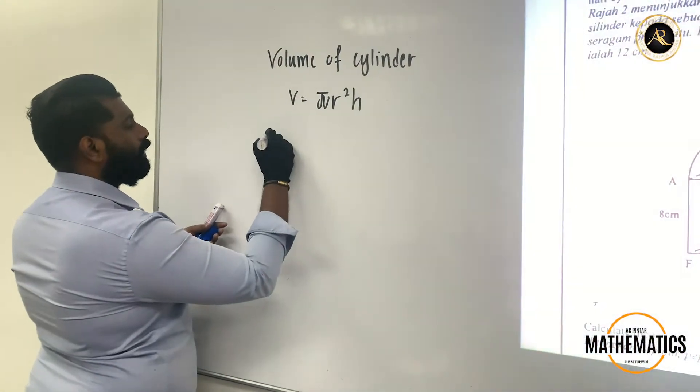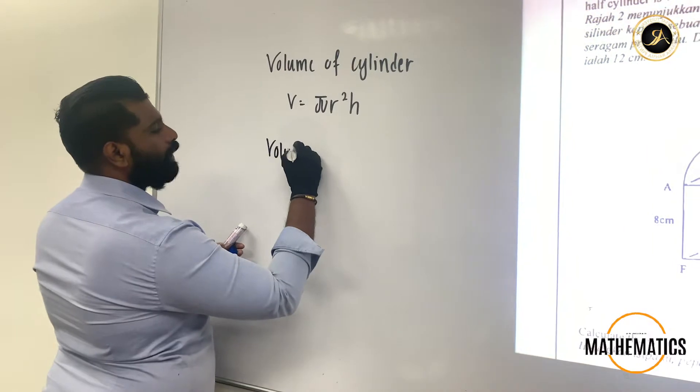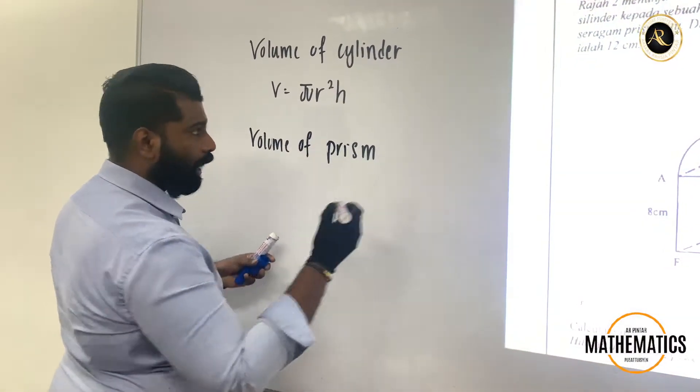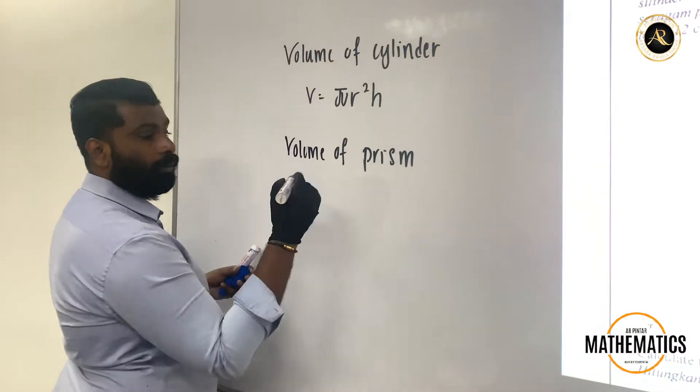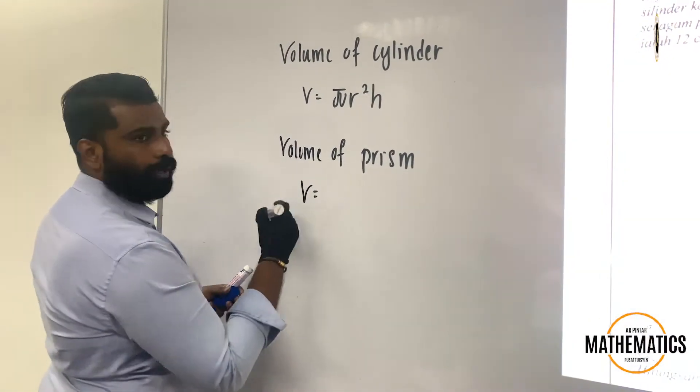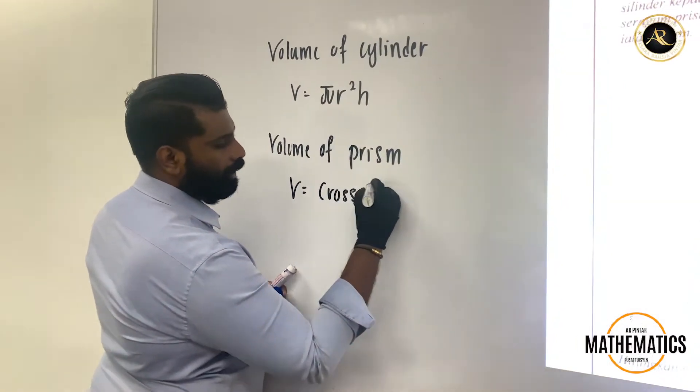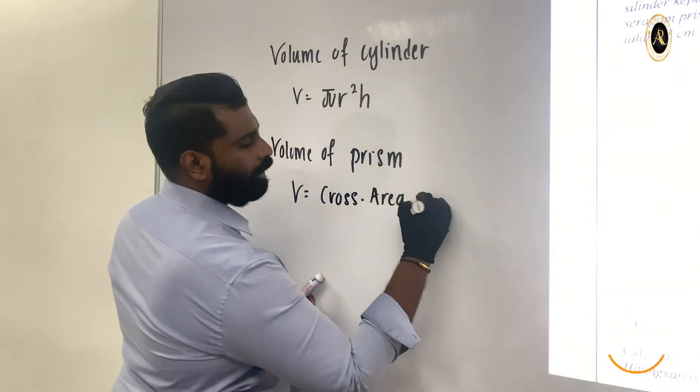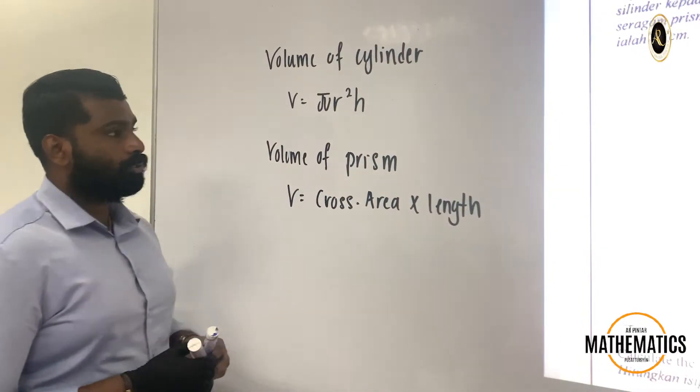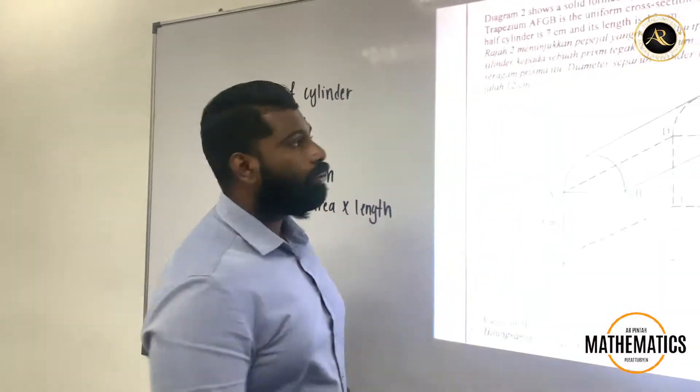Another one we are talking about is prism, volume of prism. The prism we have so many types of prism, but here we are going to look into the trapezium prism. The formula to find the volume will be cross section area times with your length. These are the two formulas.